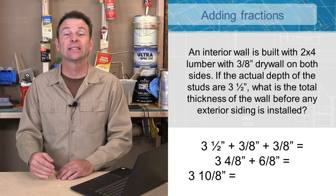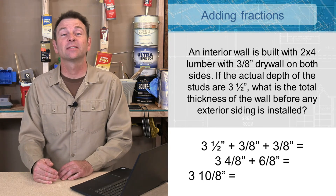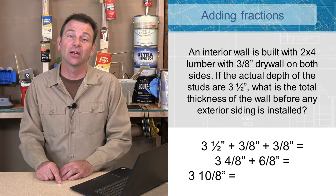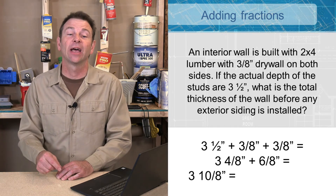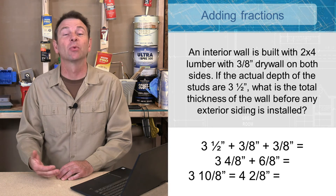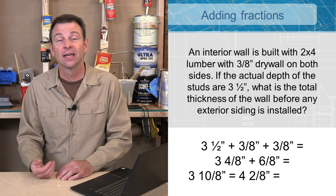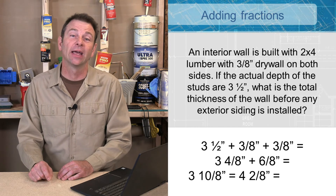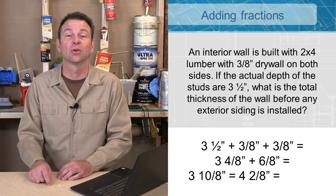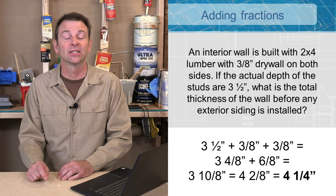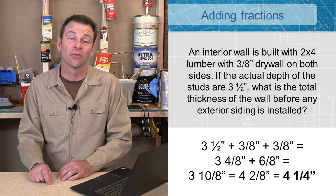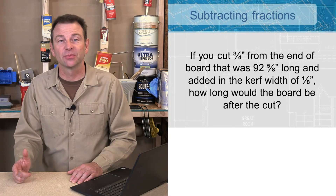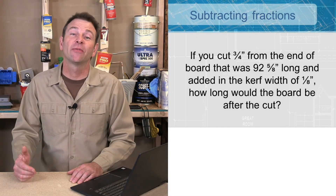Once again we have an improper fraction — three and ten-eighths is heavy on the top. We can subtract one from ten-eighths, which is actually eight over eight, and carry it over to our three. So we have three plus one which is four, and we're left with two-eighths. We're not quite done yet — we have to simplify two-eighths to a more common fraction. Two-eighths is equivalent to one-quarter. So now we have four and one-quarter inches.